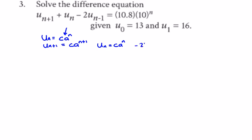And minus 2·u_{n-1} is minus 2 times c·a^{n-1}. Bringing all of these together, I can factor out c·a^n. That leaves a^1 here — bringing the indices together to get n+1, plus 1, and then minus 2, and n-1 will give 2 over a, which brings up to a^{-1}.